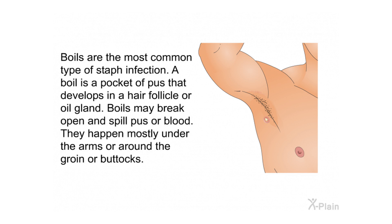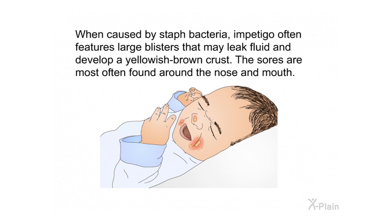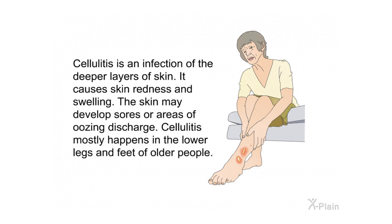Impetigo is a contagious and often painful rash that can develop at any age, but is most common in young children and infants. When caused by staph bacteria, impetigo often features large blisters that may leak fluid and develop a yellowish-brown crust. The sores are most often found around the nose and mouth. Cellulitis is an infection of the deeper layers of skin; it causes skin redness and swelling.